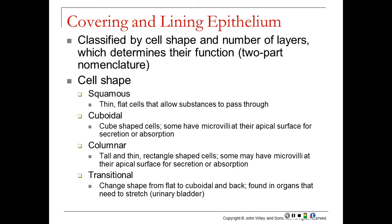Cell shape also classifies epithelium. Squamous cells are thin and flat, like shingles on a roof. Cuboidal cells are cube-shaped and sometimes have microvilli for secretion and absorption. Columnar cells are tall, thin, and rectangular — some also have microvilli. Transitional epithelium changes shape from flat to cuboidal; it's found in the urinary bladder, where cells are flat when the bladder is full and puff up to a cuboidal shape when emptied.